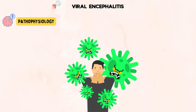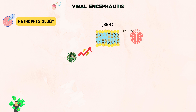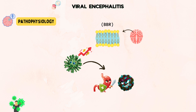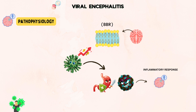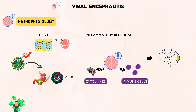The condition occurs when viruses breach the body's defenses and infiltrate the brain. These viruses, like herpes simplex, West Nile, or Japanese encephalitis virus, find their way to the brain, often crossing the blood-brain barrier. Once inside, these invaders provoke the body's immune system, setting off an inflammatory response within the brain. Immune cells such as microglia, and signaling molecules called cytokines, rally together, resulting in brain tissue inflammation. This inflammation causes swelling and damage to the delicate brain tissue, disrupting its normal function.